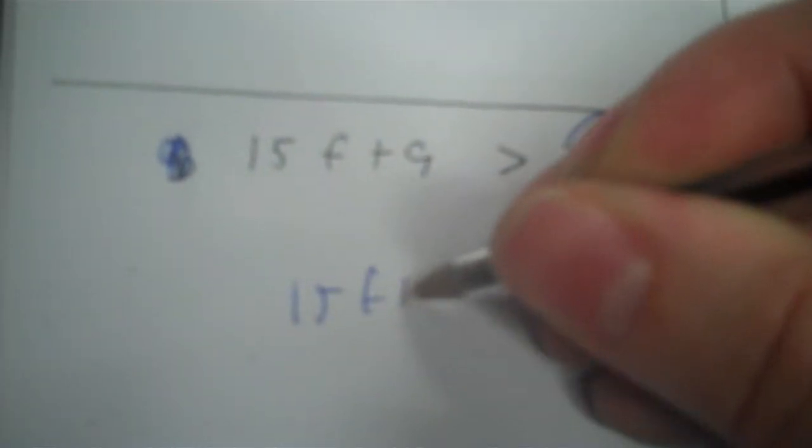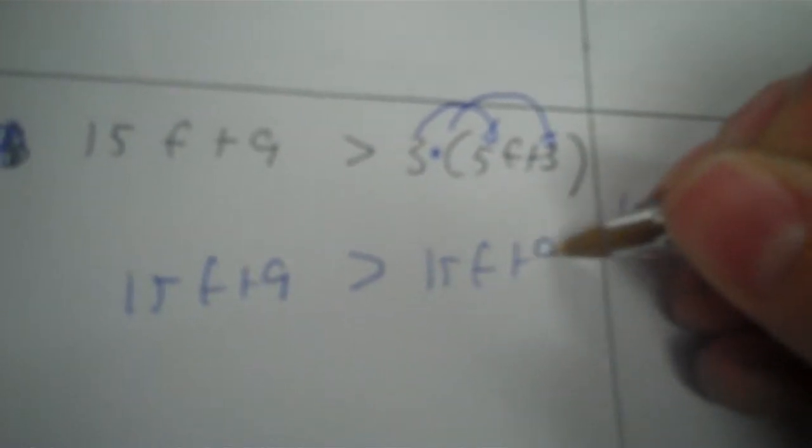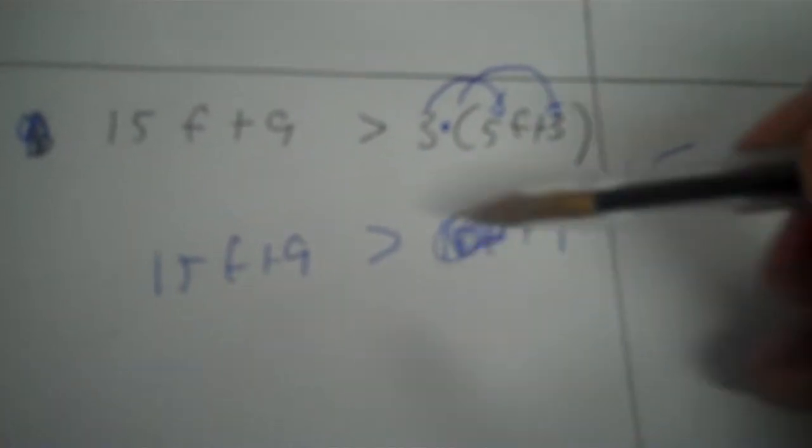Now you've got f. So I distribute 5 to 3f, and 3 to 3. The sign doesn't flip when you distribute. So it's going to be 15f plus 9. Now I have like terms of the variable on opposite sides — they're the same, so that allows me to cross them out. This becomes all solutions or no solutions, and I don't use a number line.